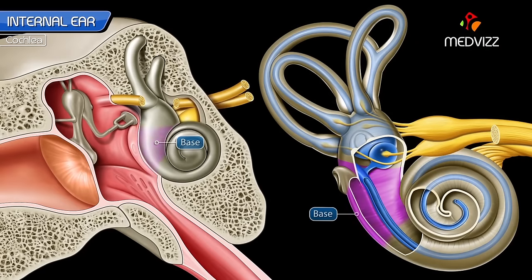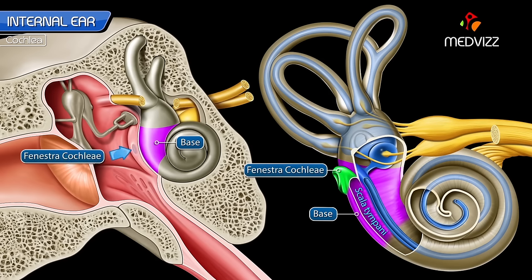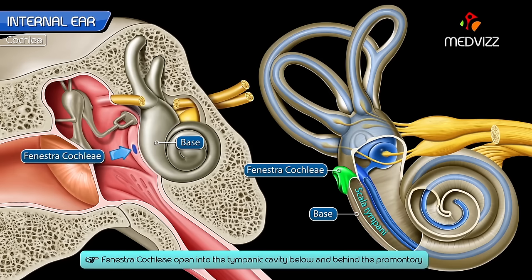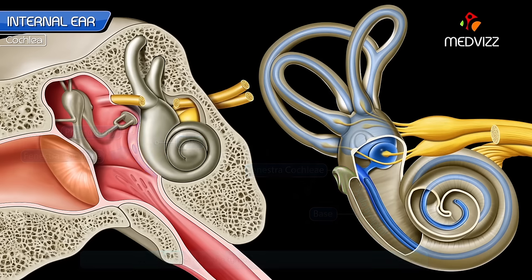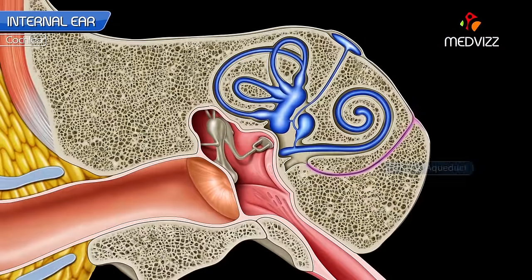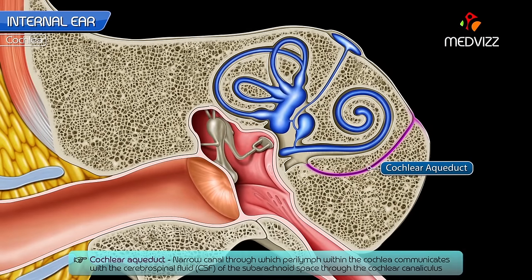Near the basal turn of the cochlea, the scala tympani presents two features. The fenestra cochleae opens into the tympanic cavity below and behind the promontory. The cochlear aqueduct is a narrow canal through which the perilymph within the cochlea communicates with the cerebrospinal fluid of the subarachnoid space through the cochlear canaliculus.